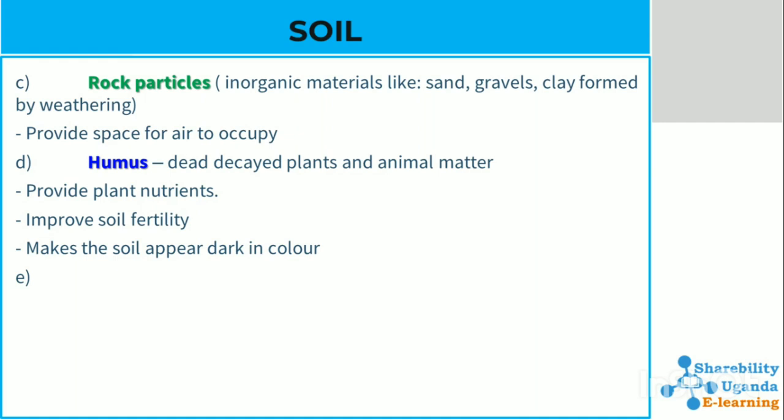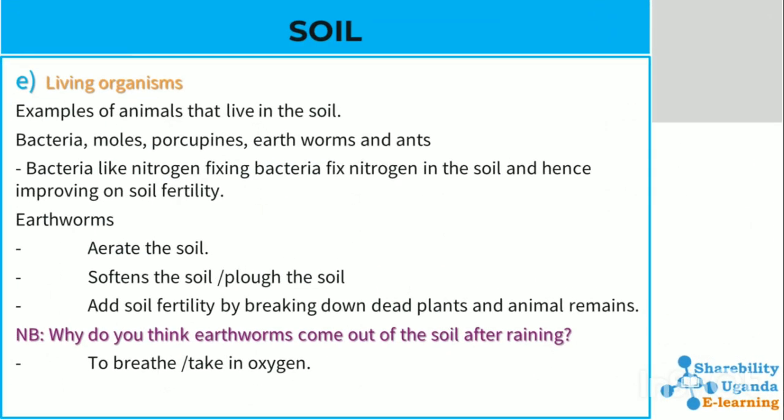Humus is the dead or decomposed organic material. It is used by plants to provide nutrients, improve soil fertility, and it makes the soil appear dark in color. Living organisms include moles, porcupines, earthworms, and ants. Bacteria like nitrogen-fixing bacteria help fix nitrogen in the soil and hence improve its fertility. Earthworms help aerate the soil, soften the soil, and add soil fertility by breaking down dead plants and organic remains.